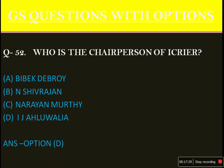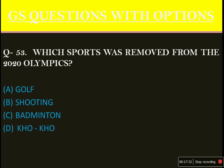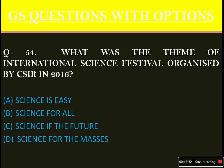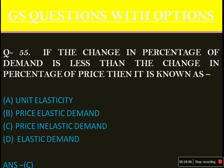Which sport was removed from the 2020 Olympics? The answer is option B: shooting. I think this is the right answer, but if anyone watching this thinks it is not, kindly correct it in the comment section. What was the theme of the international science festival organised by CSIR (Council of Scientific and Industrial Research) in 2016? The answer is option D: Science for the Masses. If the change in percentage of demand is less than the change in percentage of price, then it is known as — option C: price inelastic demand.